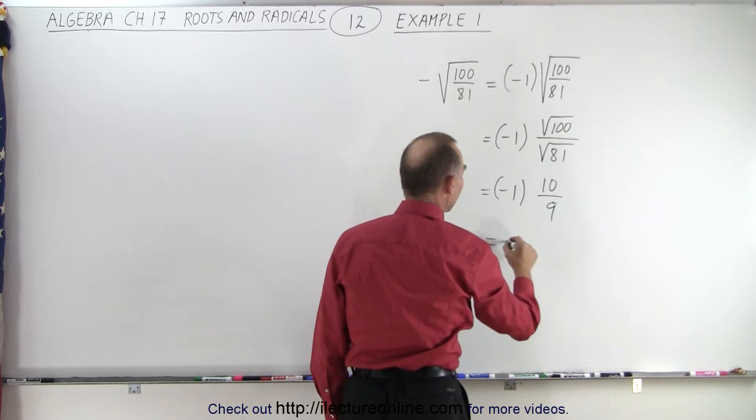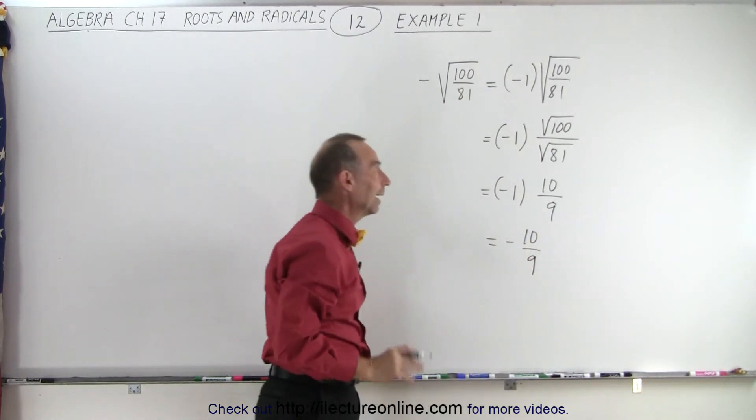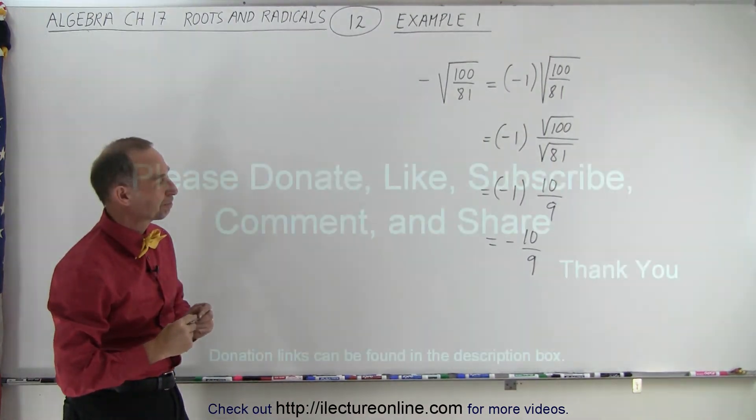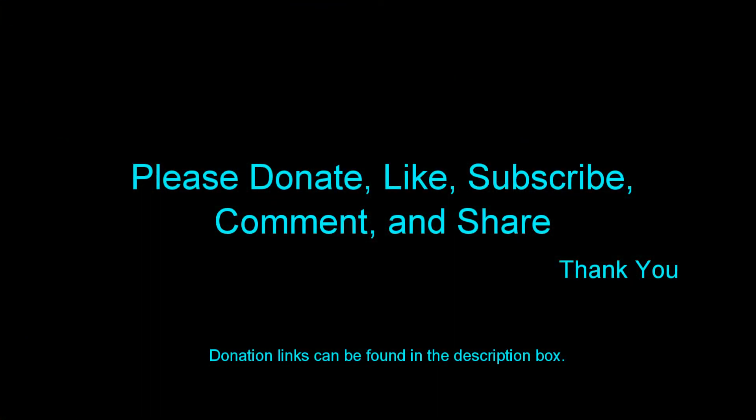And so essentially, this is negative 10 over 9. And that's how we simplify a radical like that. Thank you.